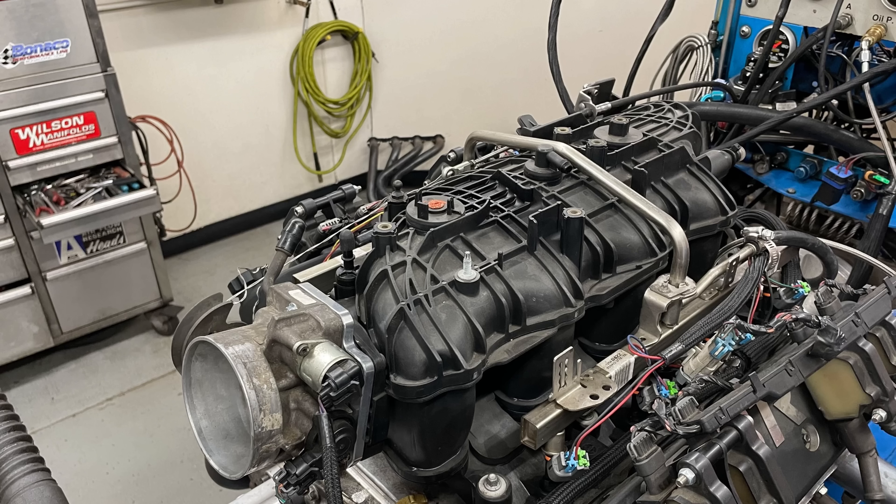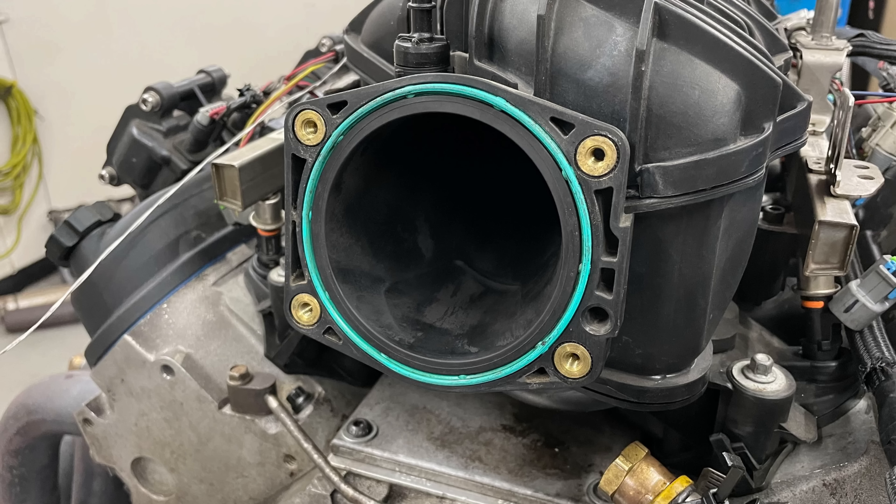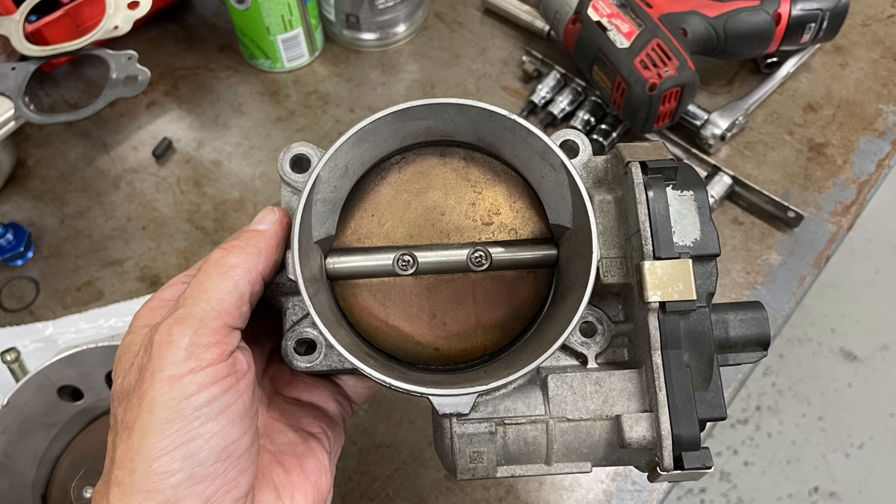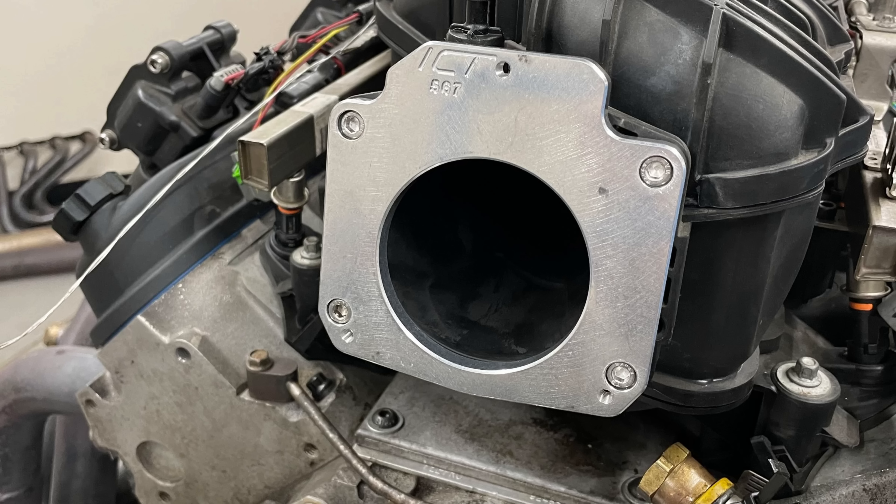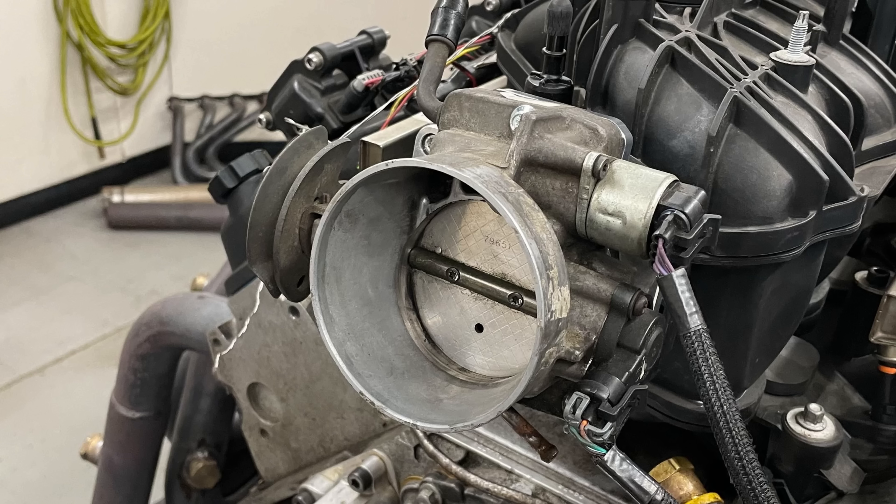You've got a Trailblazer SS. It's set up for a 90 millimeter throttle body, but like on a cam 5.3, do you really need to run the bigger throttle body? So we'll run it first with a 90 millimeter or 92 millimeter mechanical throttle body. Then we'll put an adapter on it and put the factory truck 78 millimeter throttle body and find out what happens.